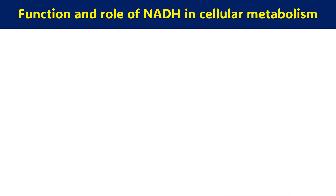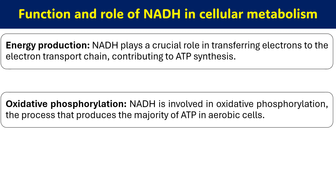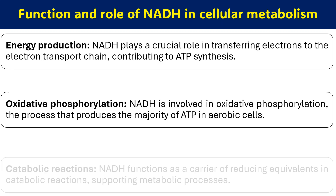Regarding the function and role of NADH in cellular metabolic processes, there are three important areas. First, energy production: NADH plays a crucial role in transferring electrons to the electron transport chain, contributing to ATP synthesis during oxidative phosphorylation. In aerobic conditions, when we use oxygen for ATP production, NADH provides the maximum ATP yield through the electron transport chain.